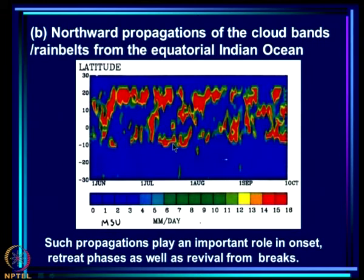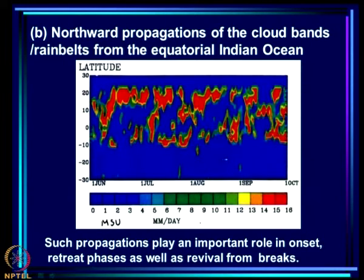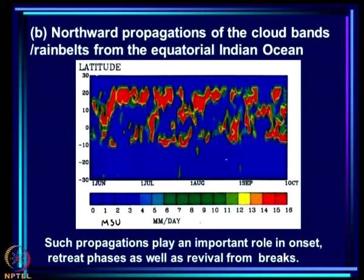Another important feature we looked at on the sub-seasonal scale is the northward propagation of cloud bands or rain belts emanating from the equatorial Indian Ocean and propagating northward up to the monsoon zone. These propagations play a very important role in the seasonal transition — that is, the onset phase from spring to summer as well as the retreat phase from summer to fall. They also play a very important role within the season after the system is established over the monsoon zone, in revival from the breaks.